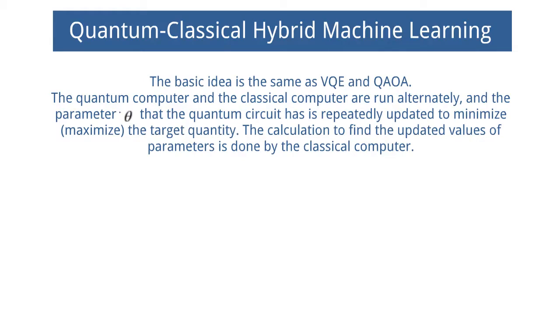The basic idea is the same as VQE and QAOA. The quantum computer and the classical computer are run alternately, and the parameter theta that the quantum circuit has is repeatedly updated to minimize or maximize the target quantity. The calculation to find the updated values of parameters is done by the classical computer.